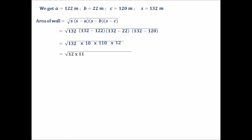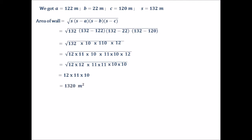Now, 132 can be split as 12 into 11; 110 can be split as 11 into 10; and we keep 10 and 12 as they are. So inside the square root we have 12 into 12 (a pair of 12), 11 into 11 (a pair of 11), and 10 into 10 (a pair of 10). Since we have perfect pairs, we get outside the square root: 12 into 11 into 10. That gives us 132 into 10 equals 1320 meter square as the area of the wall.